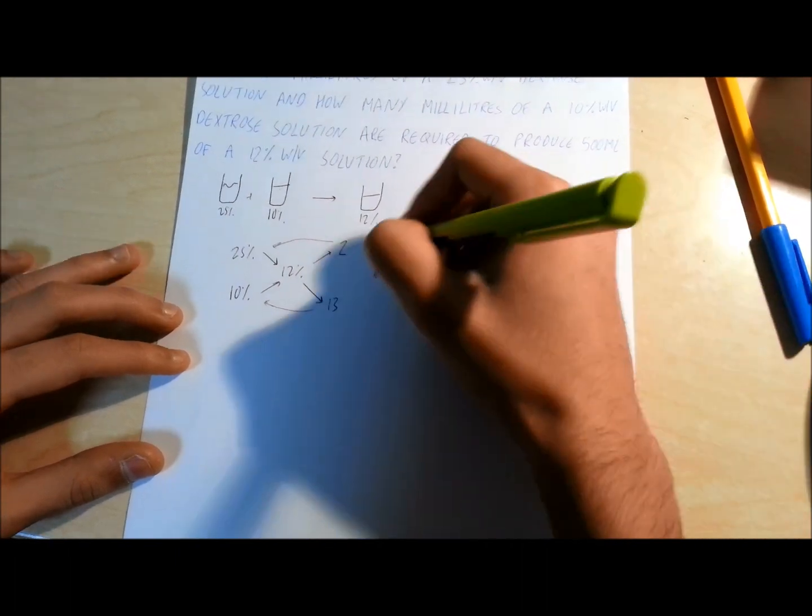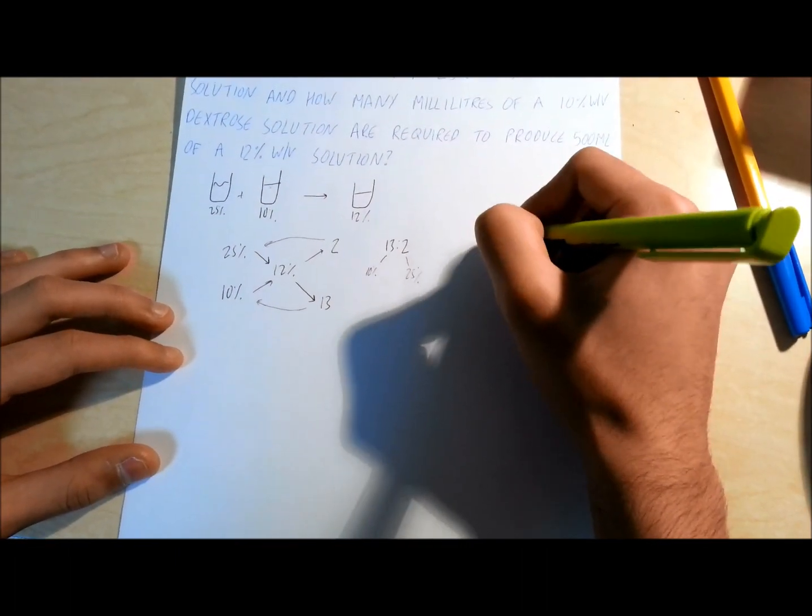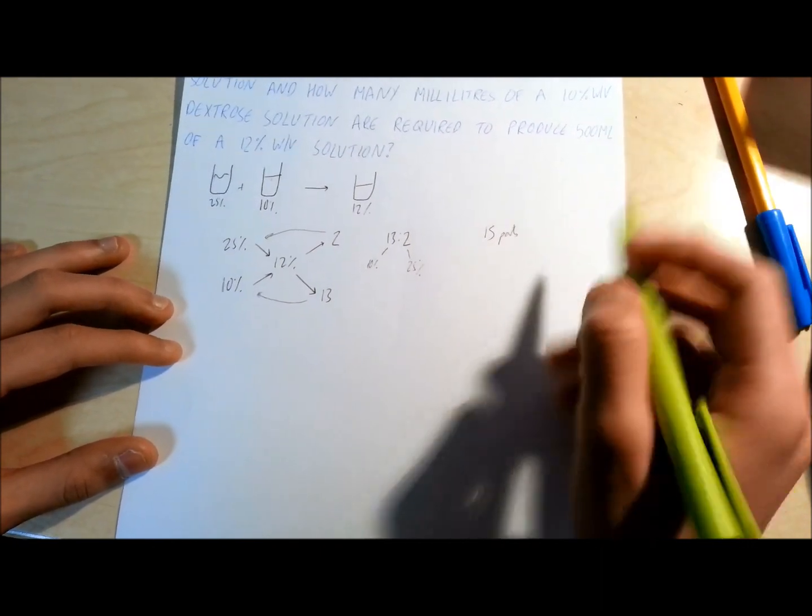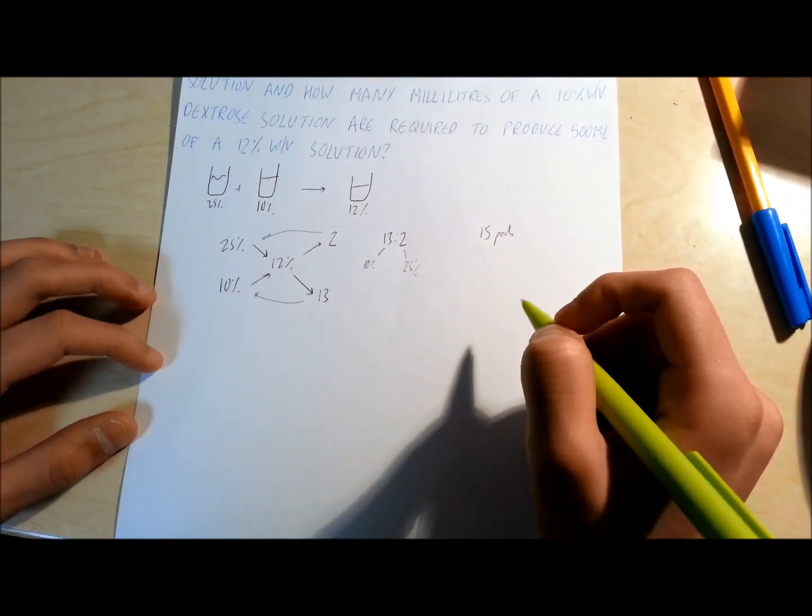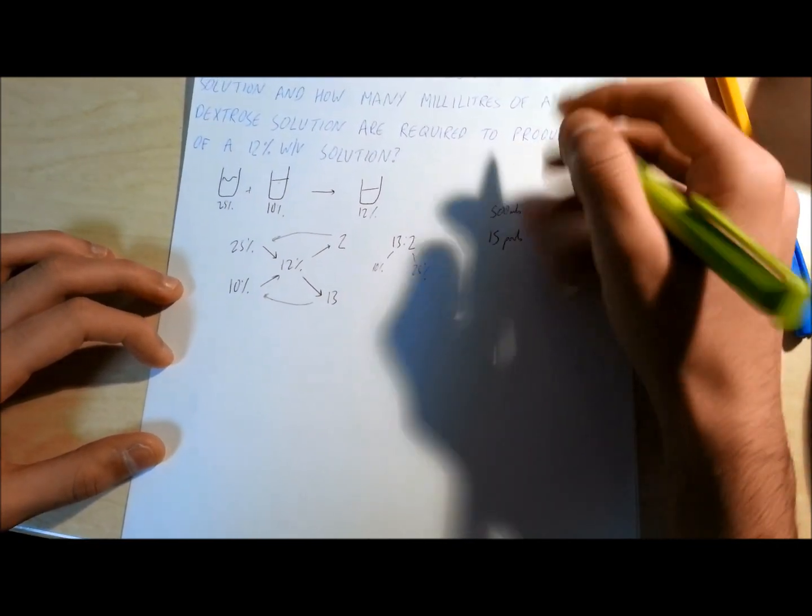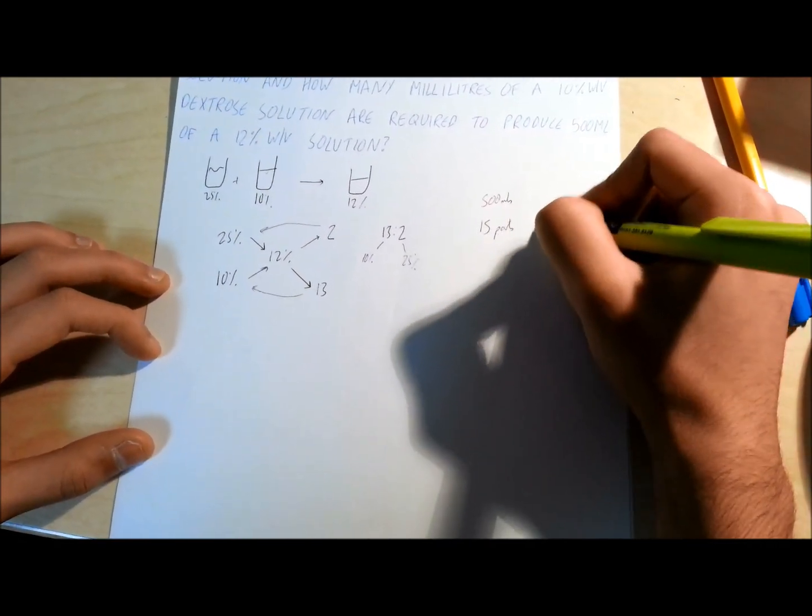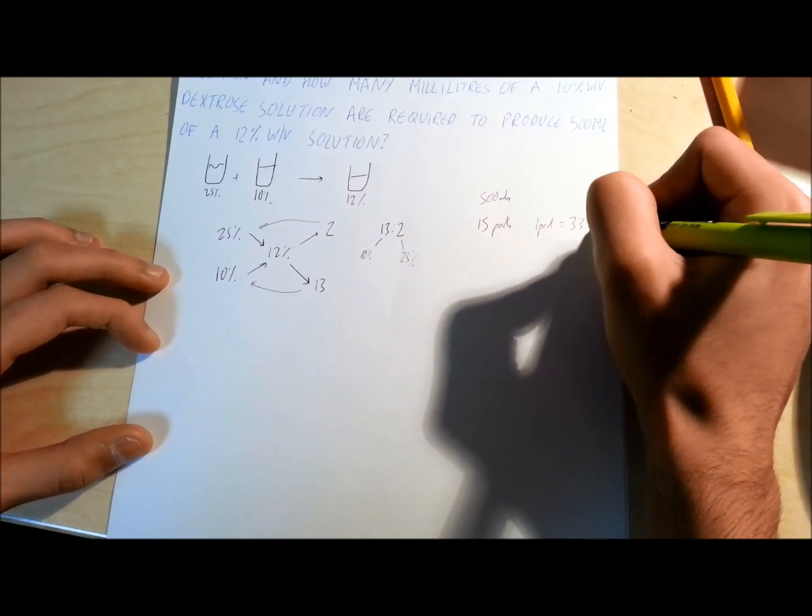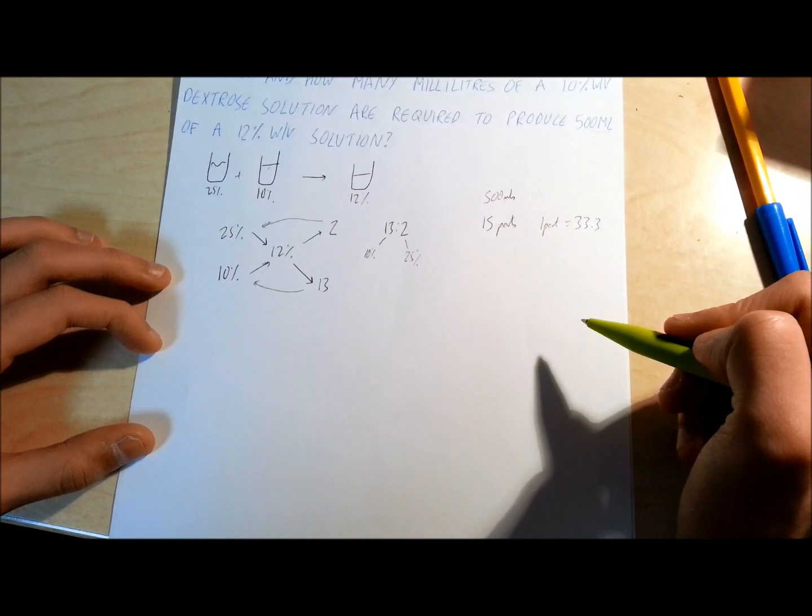Now, in total, that's 15 parts. So we are going to use the 500 mil that we need altogether and split that between 15 parts. Now, after that, you work out one part, which is 33.3. So I've just done 500 divided by 15.